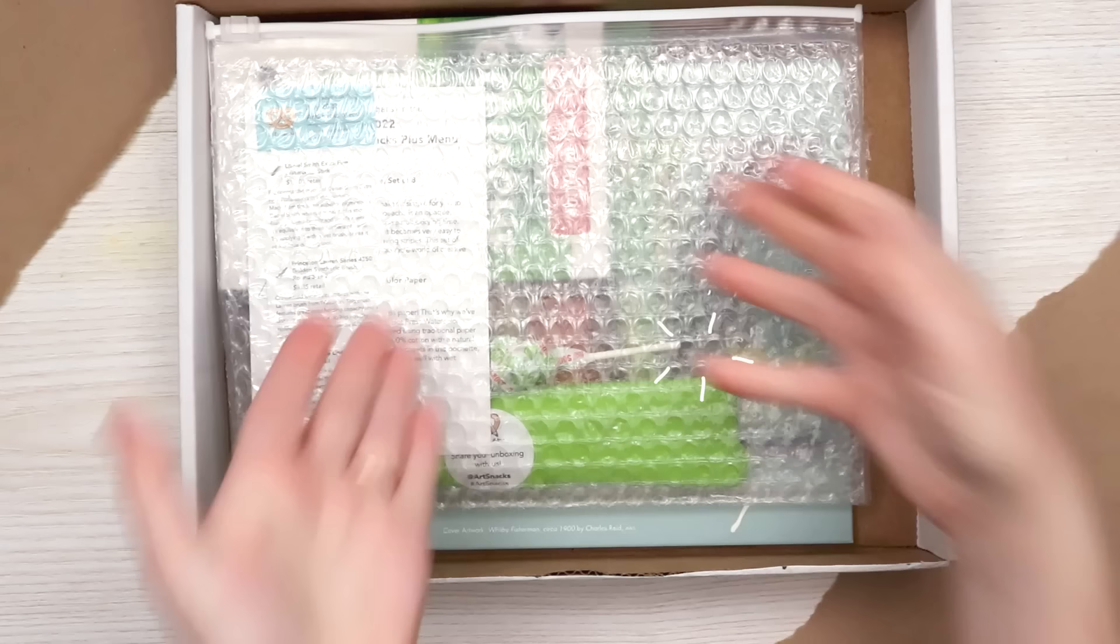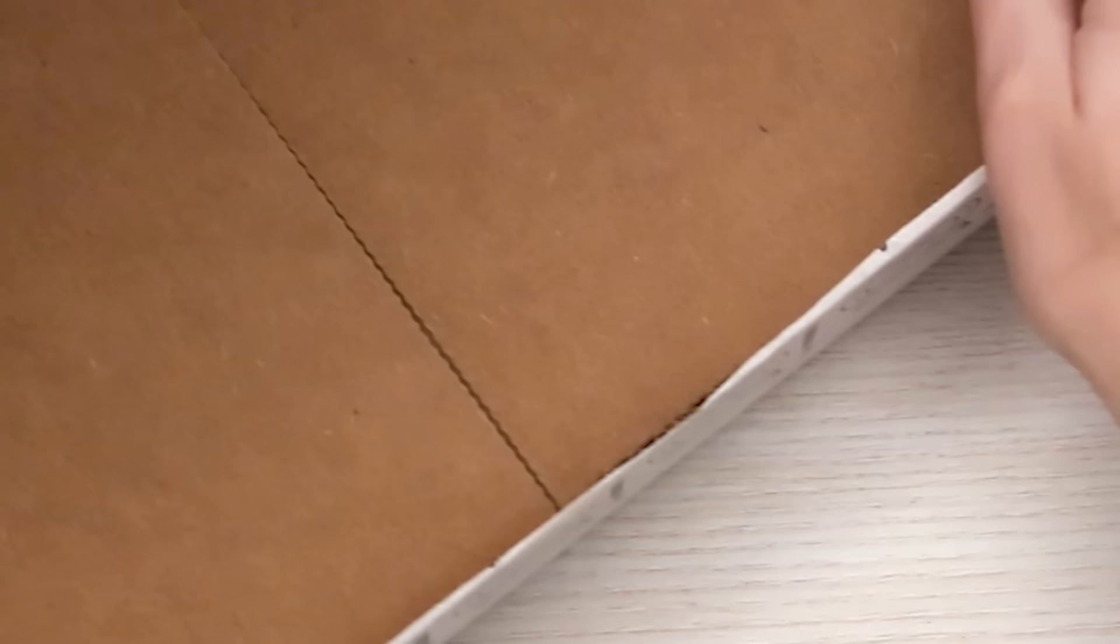Here we go, we've got a box of art supplies. Let's just take everything out. Ooh, gouache! Put our sassy box over here to the side and let's quickly go through our art supplies, starting off with our sticker.